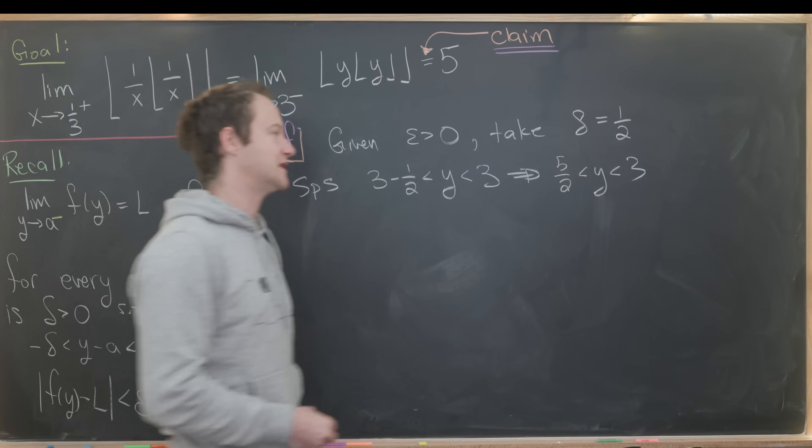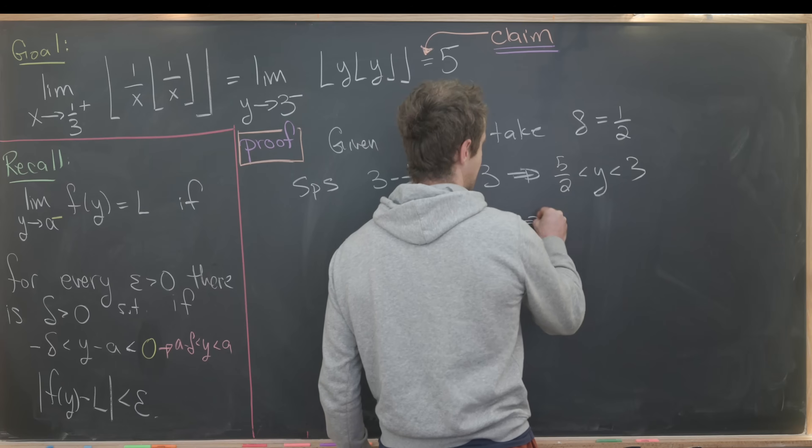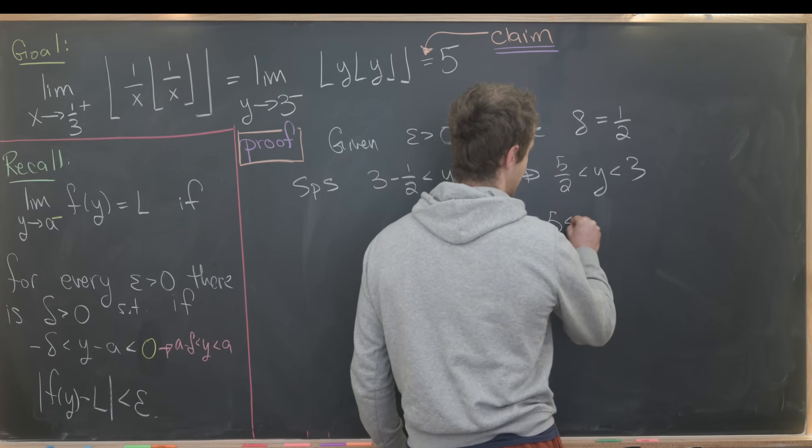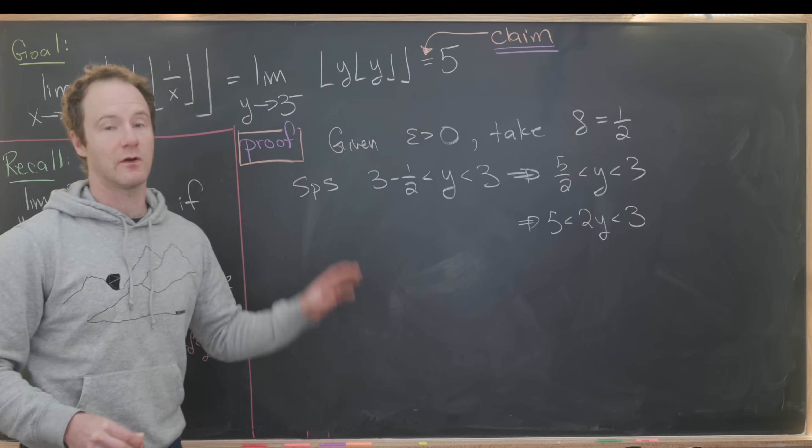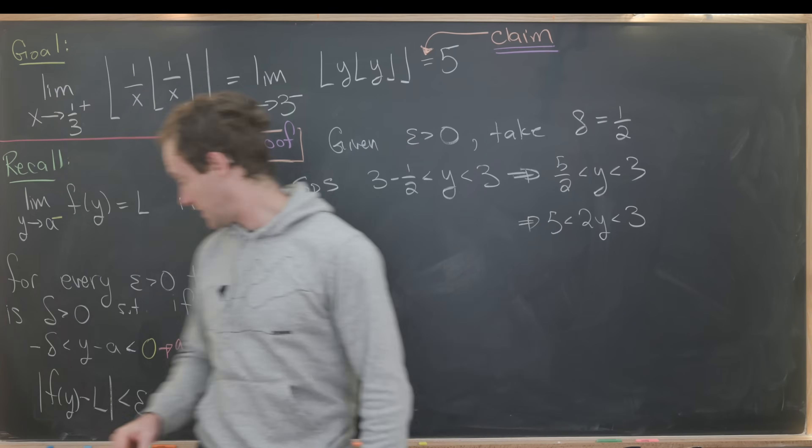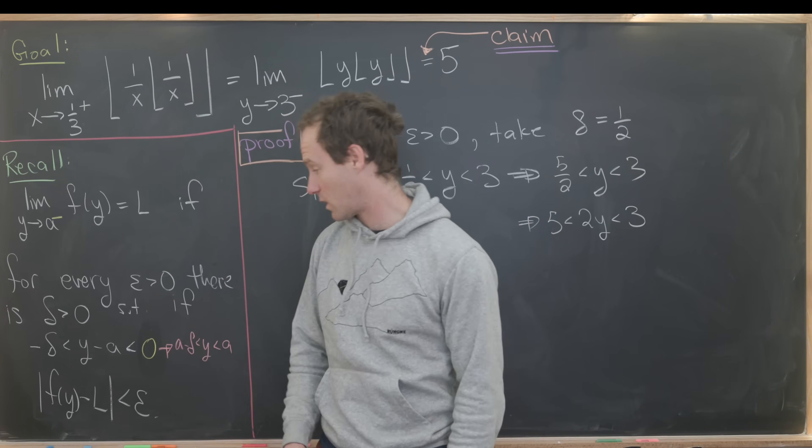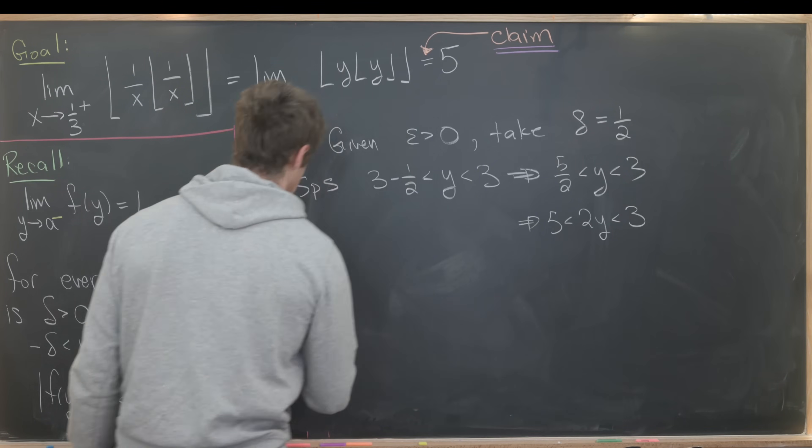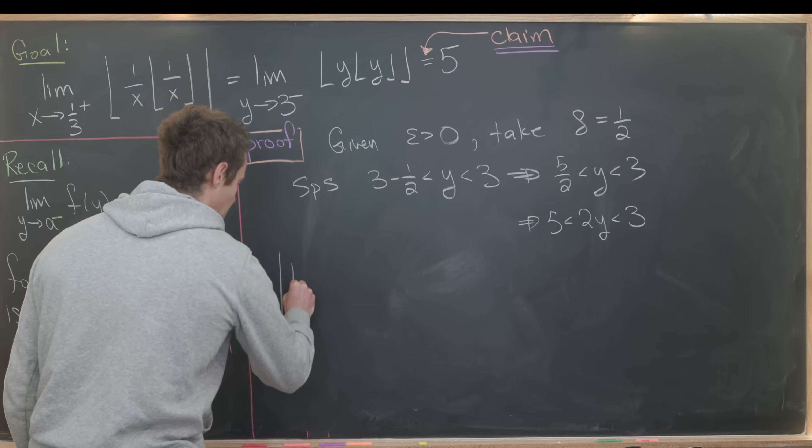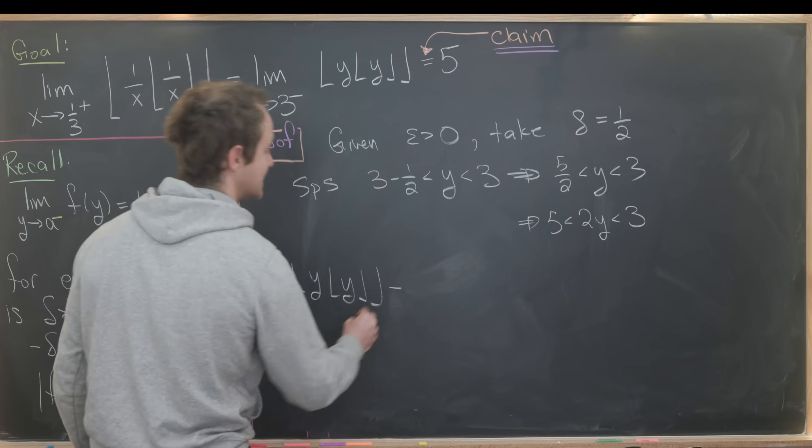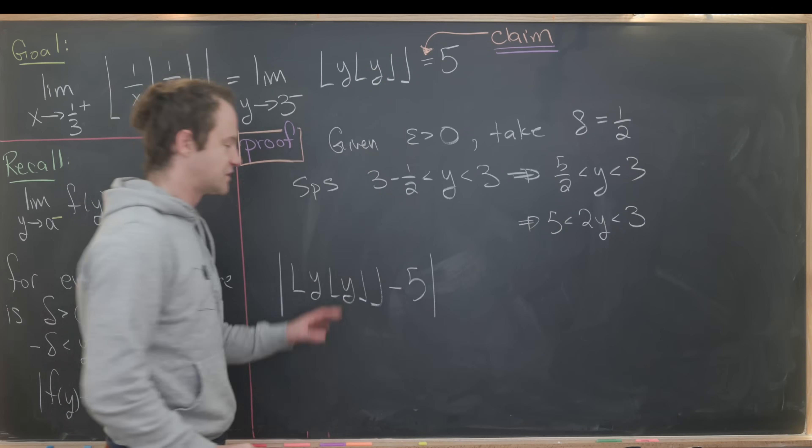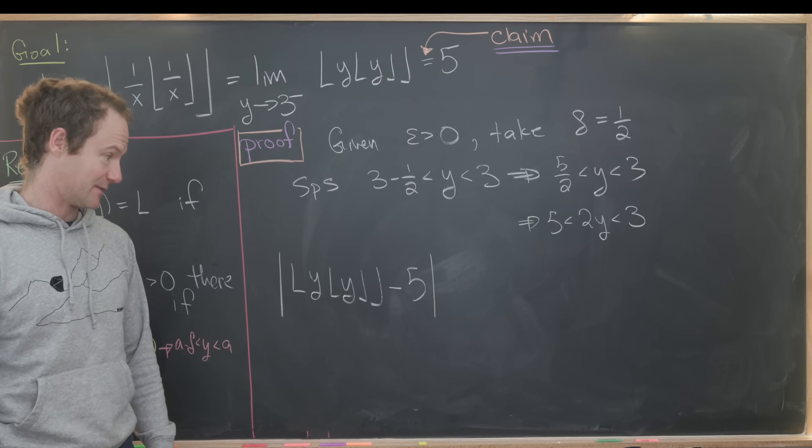While we're at it, because we know we'll need it for later, observe that this implies that 5 is less than 2 times y, which is less than 3. Now we're ready to calculate this inequality. Let's look at the absolute value of the floor of y times the floor of y minus 5. We would like this to be less than epsilon.